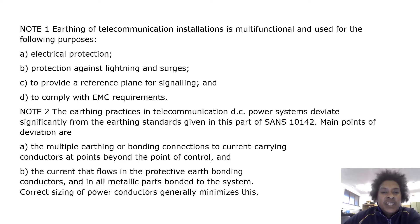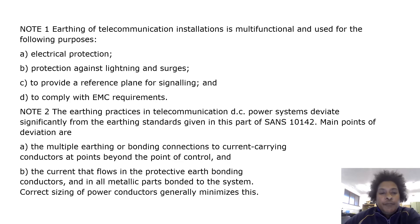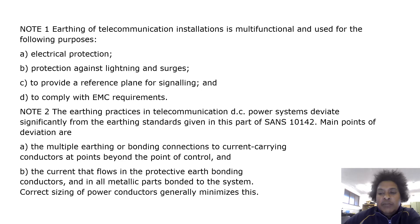Note: Earthing of telecommunication installations is multifunctional and used for electrical protection, protection against lightning surges, to provide a reference plane for signalling, and to comply with EMC requirements. Note: Earthing practices in telecommunication DC power systems deviate significantly from the earthing standards in this part of SANS 10142. Main points of deviation are the multiple earthing or bonding connections to current-carrying conductors at points beyond the point of control, and the current that flows in the protective earth bonding conductors and metallic parts bonded to the system. Correct sizing of power conductors generally minimizes this.